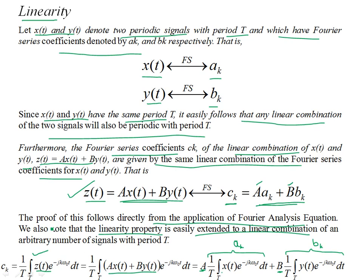You should also note that this linearity property is easily extended to a linear combination of any arbitrary number of signals with period T. For example, you can have another signal r(t) which is also periodic with period T. Since all the signals in the linear combination are periodic, the resulting signal is also periodic, and the Fourier series coefficients will be the linear combination of the respective Fourier coefficients of all the individual signals.